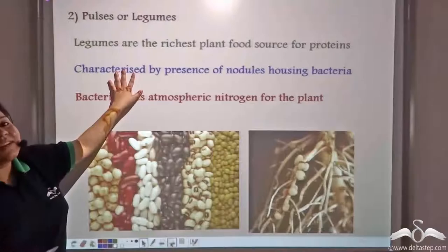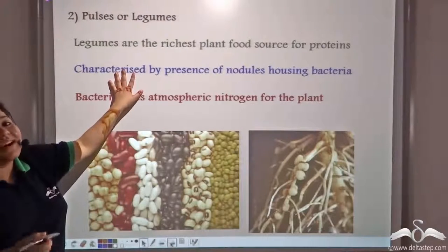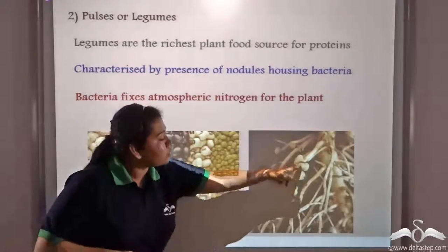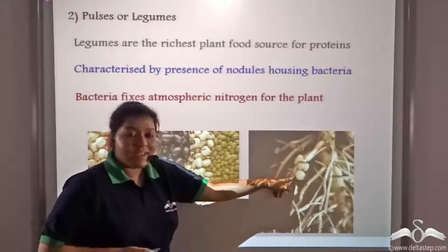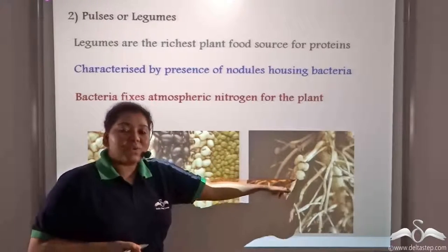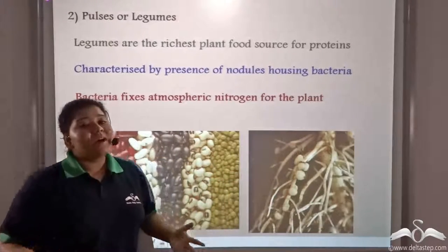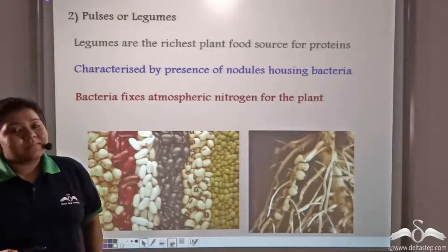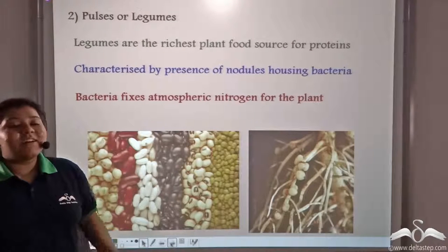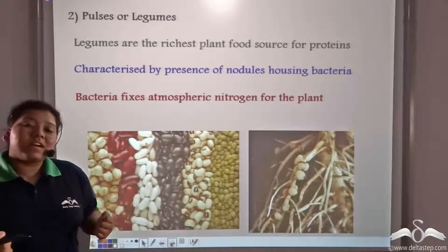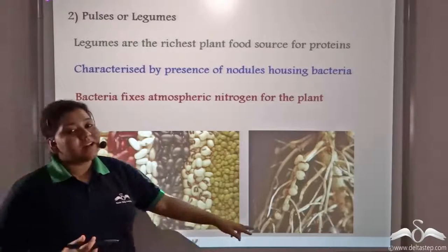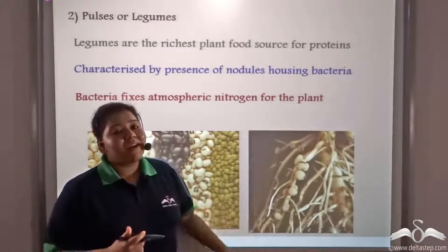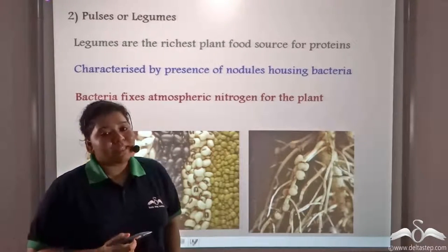Leguminous plants are characterised by the presence of nodules in their roots, and these nodules house nitrogenous bacteria. These bacteria fix atmospheric nitrogen for the plant so that the plant can manufacture proteins.